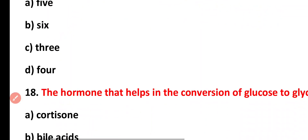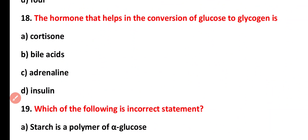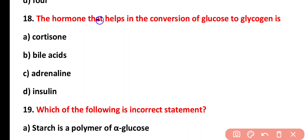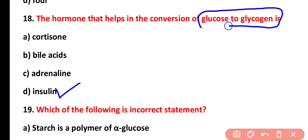Question eighteen: the hormone that helps in the conversion of glucose to glycogen is cortisone, bile acid, adrenalin, or insulin. The correct answer is option D. Insulin converts excessive glucose into glycogen.